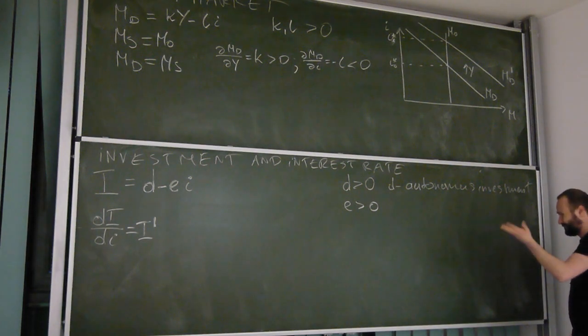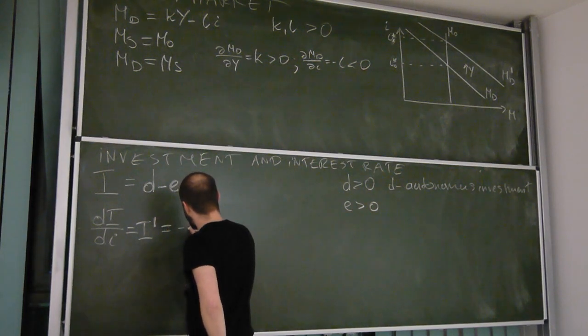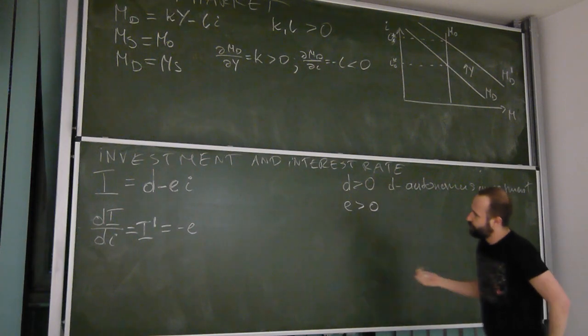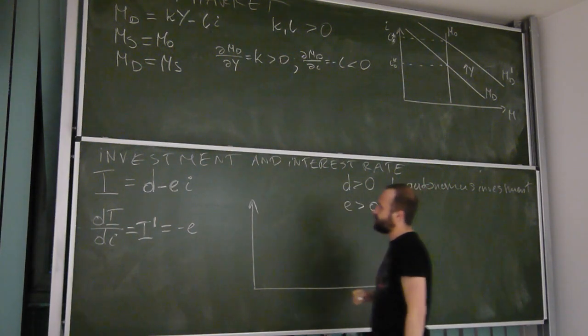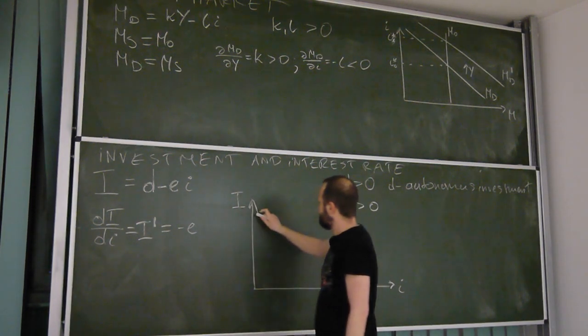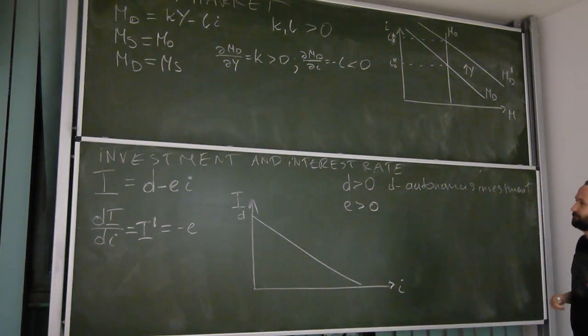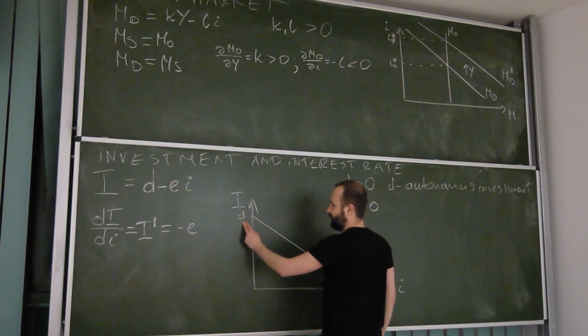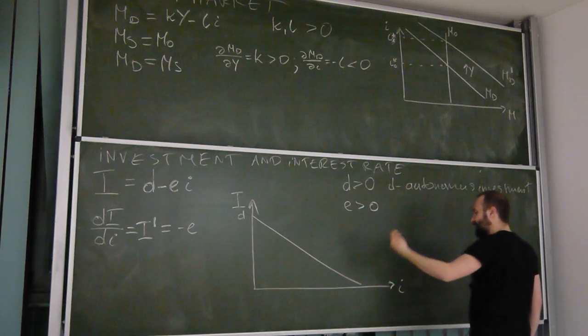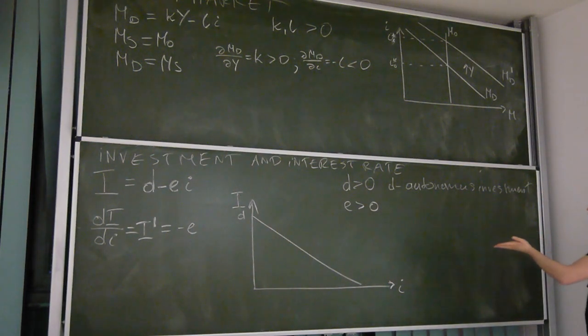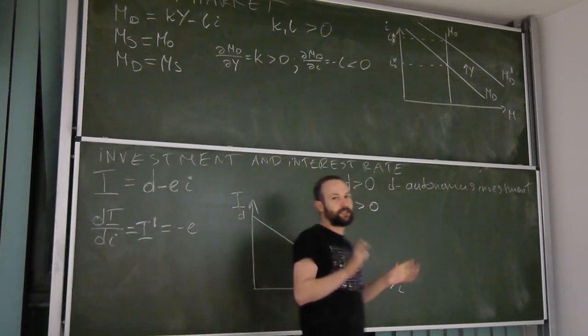And in our linear model we will be using negative e times i, where e of course is positive but has a minus up front, and it measures the sensitivity of investment to changes in interest rate. So consequently, the derivative we were looking for is negative e. Now we can also put this relationship on a graph. We are still assuming that the relationship is linear, so if here we have interest rate and here investment, then the relationship would look like this. If interest rate would be zero, we would have some level of investment d, and with higher and higher interest rate, we expect the level of investment to fall.